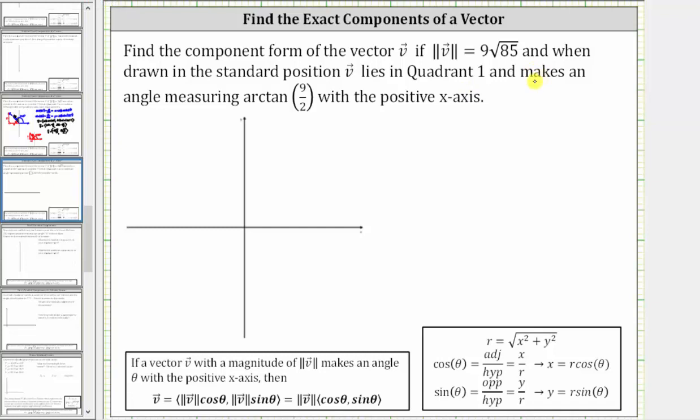So we know the vector's in the first quadrant. Let's say this is vector v. And because the magnitude is 9√85, we know the length of the vector is 9√85.